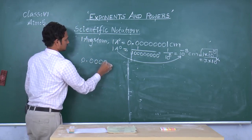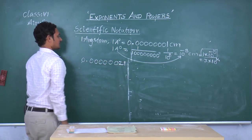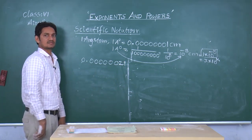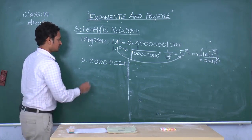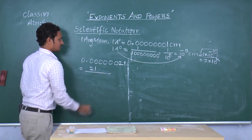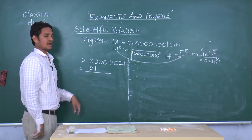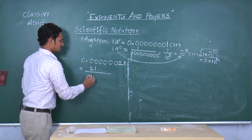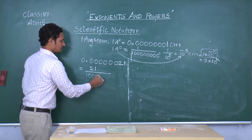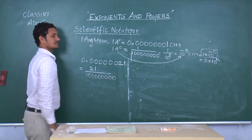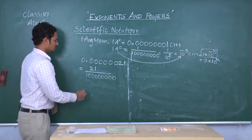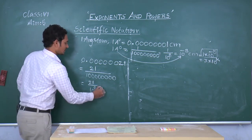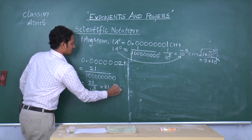I am taking one more example. It is a very small number and it is very difficult to read. I am trying to convert this very small number into simplest form. First of all, we can convert it into a fraction. After the decimal point there are 8 digits, so those many zeros will come in the denominator — 8 zeros. We can write it in exponential form as 21 by 10 power 8, which is 21 into 10 power minus 8.